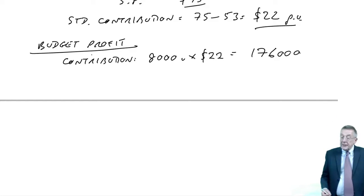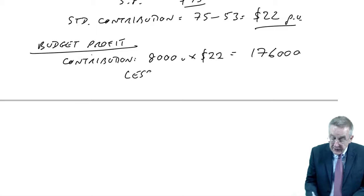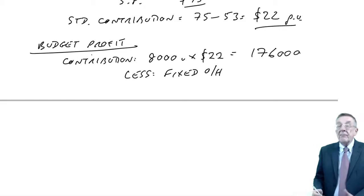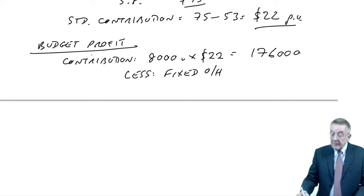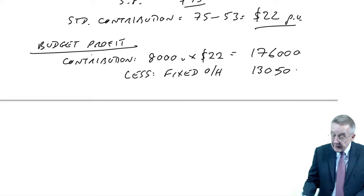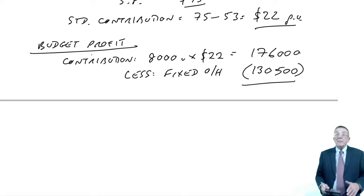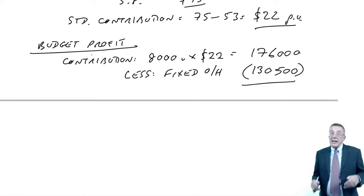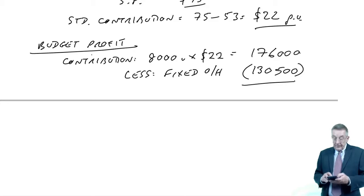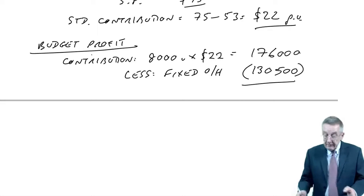For the profit, subtract the fixed overheads. If you remember, we had calculated before that the total fixed overheads were budgeted as $130,500. With marginal costing, of course, if you sell more or less, the contribution is higher or lower, fixed costs should stay fixed. But the budgeted profit is $45,500.